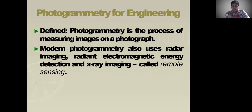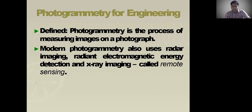Photogrammetry is a process of measuring images on photographs. Modern photogrammetry also uses radar imaging and electromagnetic energy detection, and X-ray imaging, called remote sensing. Remote sensing — RS — and GIS is a separate subject in your 4th year 1st semester, where it will be studied in depth. In our current subject, we have only a smaller part regarding remote sensing and GIS.